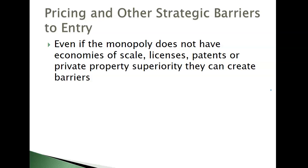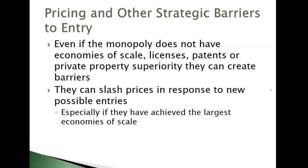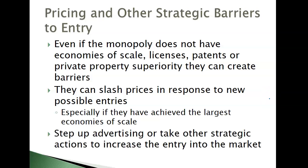Even if a monopoly doesn't have economies of scale, a license, or patents, they can still slash their prices if they're the largest. This does go into antitrust policy — they cannot go below their own costs and eat losses, as that breaks certain rules. But they can go lower than competitors, or they may have larger margins. As soon as somebody tries to enter, that new person has high entry costs — advertising, making their name known, public relations — that the established company doesn't have. They can reduce their prices to push the other person out, or step up advertising so nobody hears about the new company.